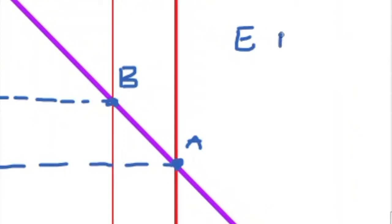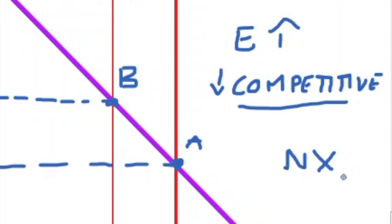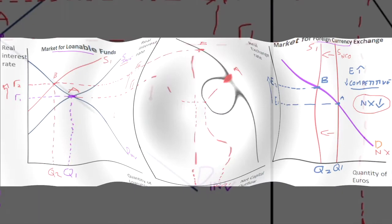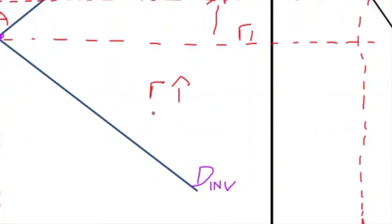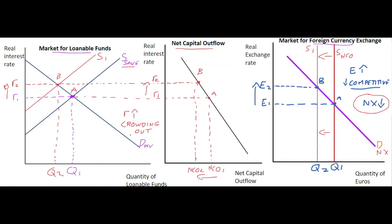When the currency appreciates, it has a negative effect on the competitiveness of the economy. An appreciation reduces exports because they become more expensive, increases imports, and generally causes net exports to decrease. So we have two negative impacts from the deficit that financed the expansionary fiscal policy: reduced net exports due to currency appreciation, and crowding out of private investment caused by the higher real interest rate in the loanable funds market.